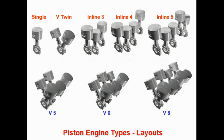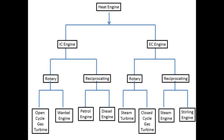1. Types of design. Reciprocating engine: In a reciprocating engine, there is a piston and cylinder. The piston does reciprocating motion within the cylinder, which is why it is called a reciprocating engine. Two-stroke and four-stroke engines are common examples of reciprocating engines.